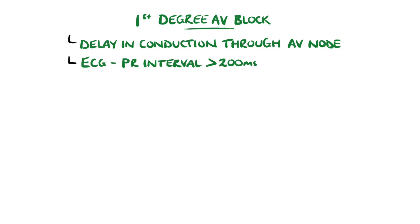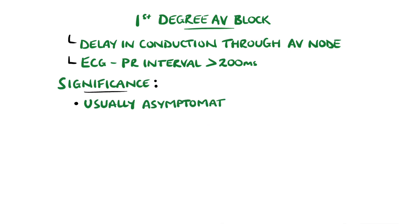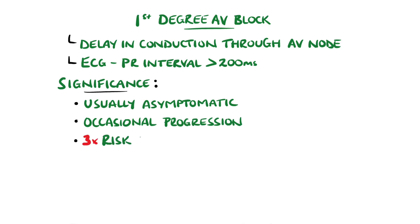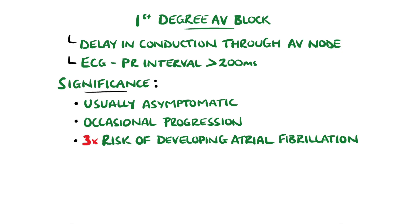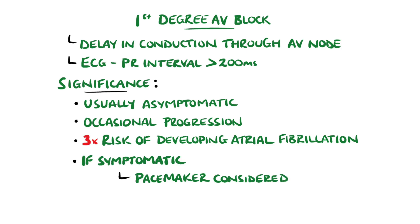Usually, first degree AV block is asymptomatic and does not need treatment, but can occasionally progress to higher grade AV blocks. Patients with a first degree AV block have three times the risk of developing atrial fibrillation, which is why follow-up is recommended. In some patients that are symptomatic with PR intervals above 300 ms, pacemakers can be considered.